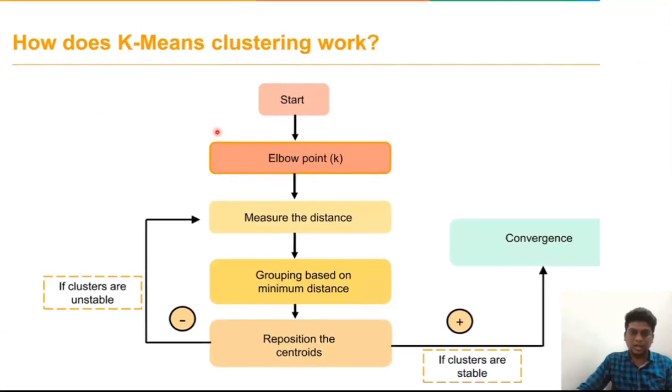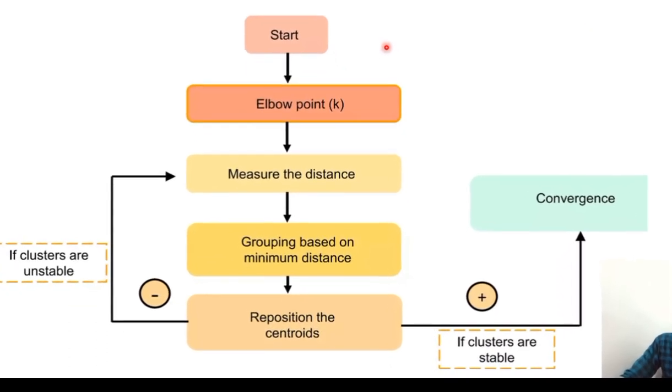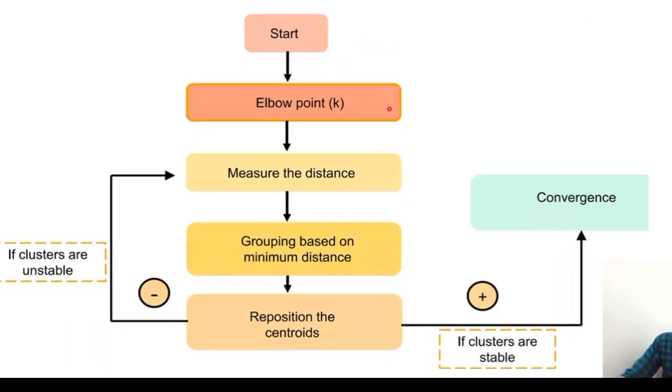This is the K-means clustering algorithm working. First we have to start with the data points. Then we have to find the elbow point. Then measure the distance between the points. Then the grouping is based on the minimum distance. We have to reposition the centroid present in the clusters. If the clusters are stable we have to perform the convergence. Otherwise measure the distance again. Then again we have to reposition the centroids till we get the clusters in a stable value.